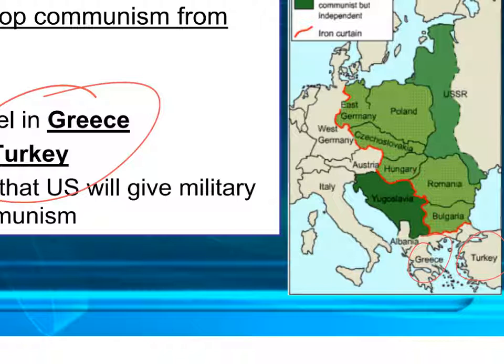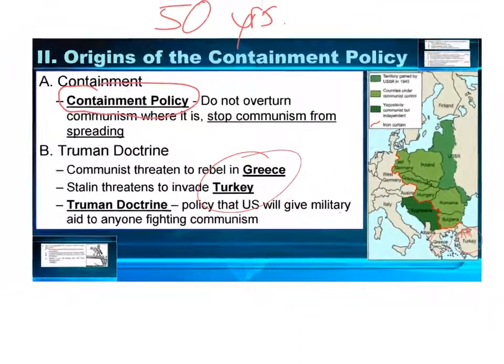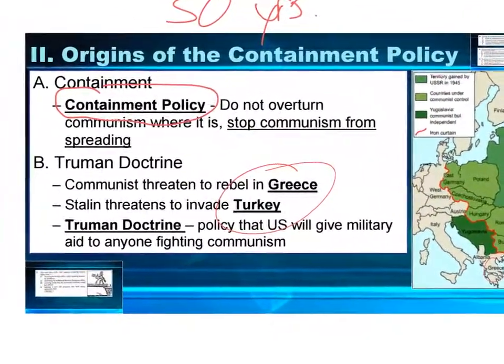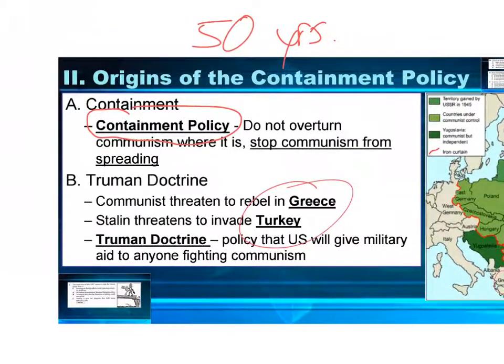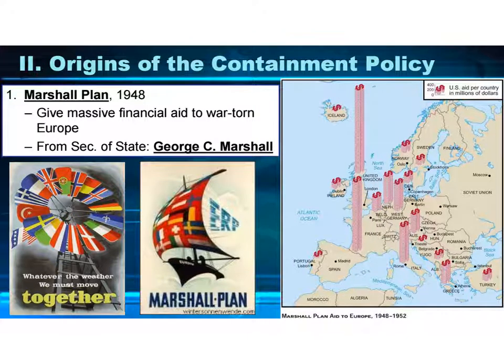We gave weapons to the Greek government to stop the communist rebels, and gave Turkey money to help them withstand Soviet pressure. In return, Turkey actually let us place missile silos there, since back then we didn't have ICBM technology and couldn't launch atomic bombs from across the world — the closest we could get was Turkey. The Truman Doctrine is the promise that we will help any European country fighting communists, with military or economic aid, whatever it takes.